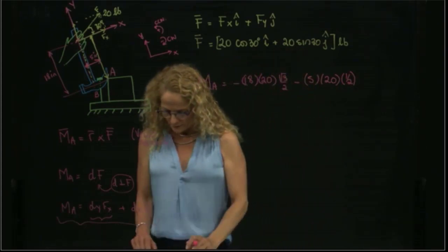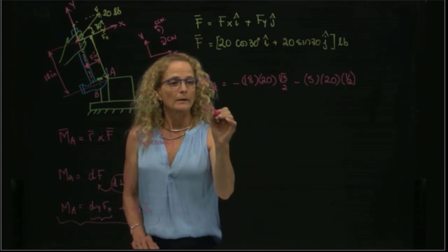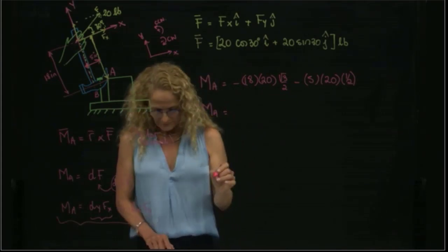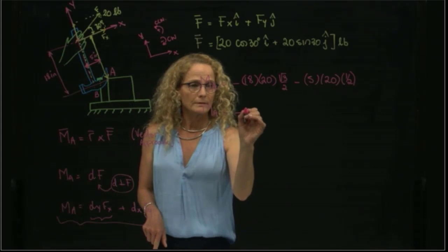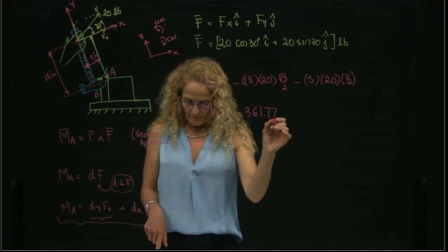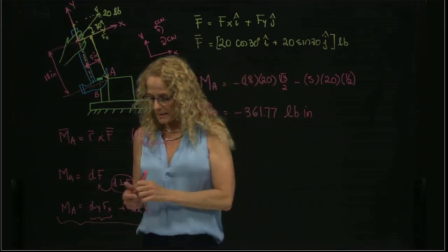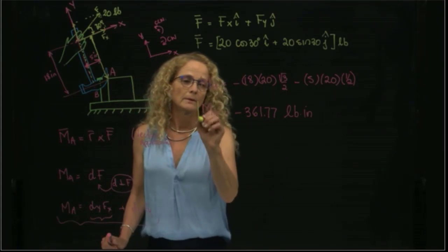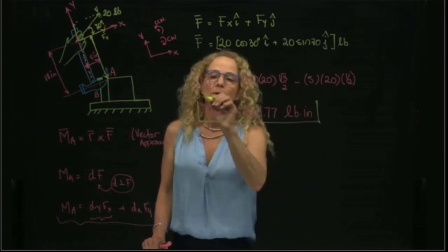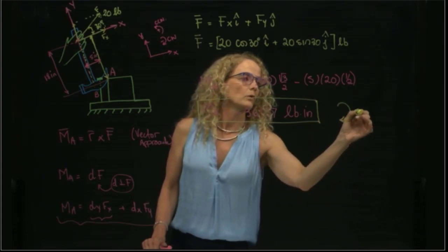Now, if I multiply those numbers, right? And I add them together, I get that the moment is negative 361.77 pounds per inch. And as I said.